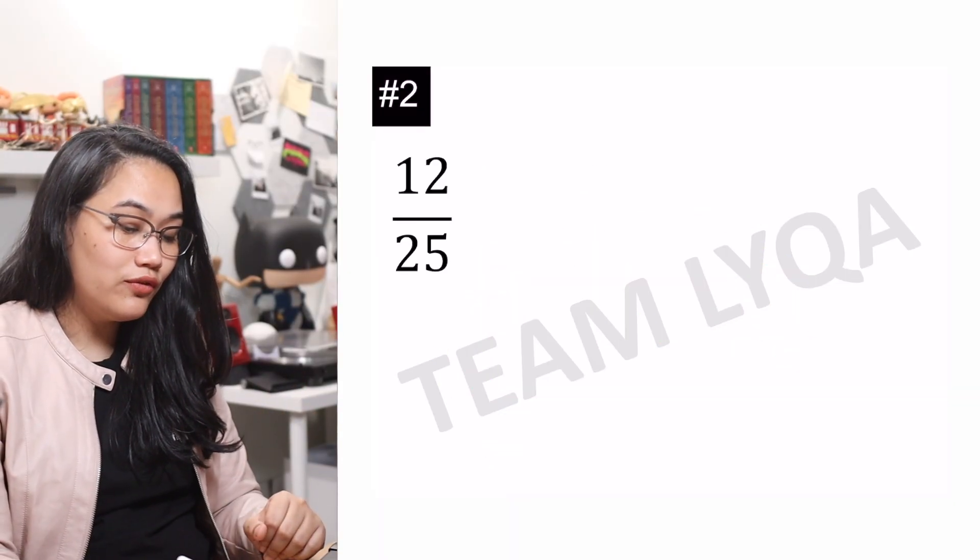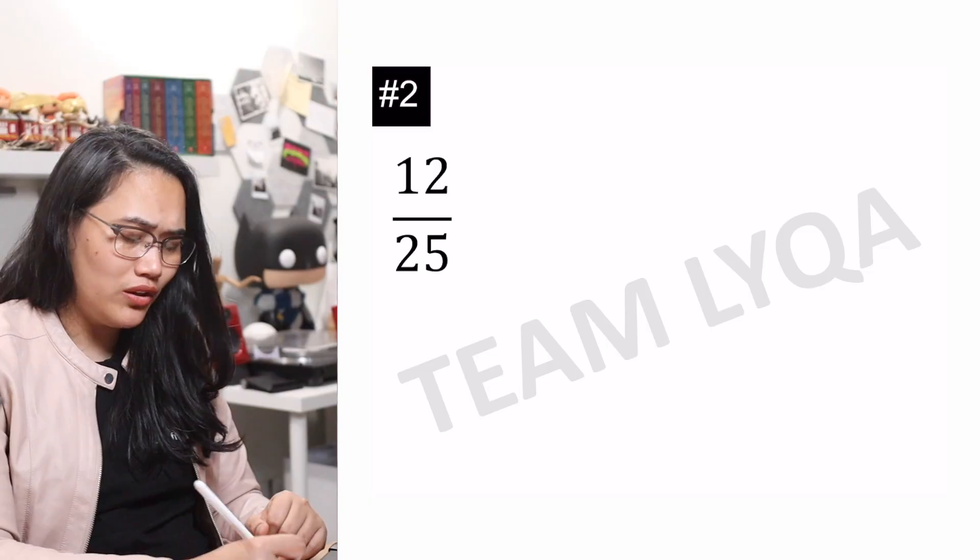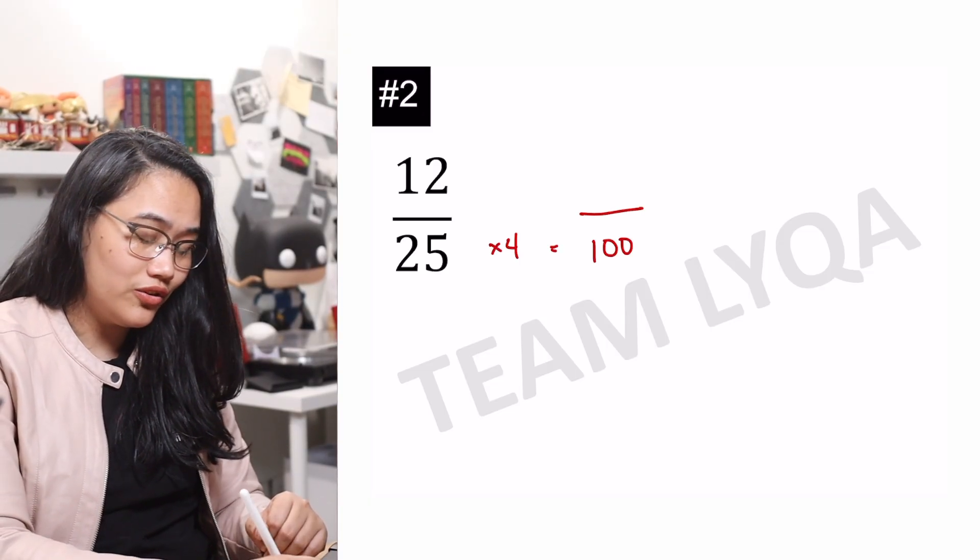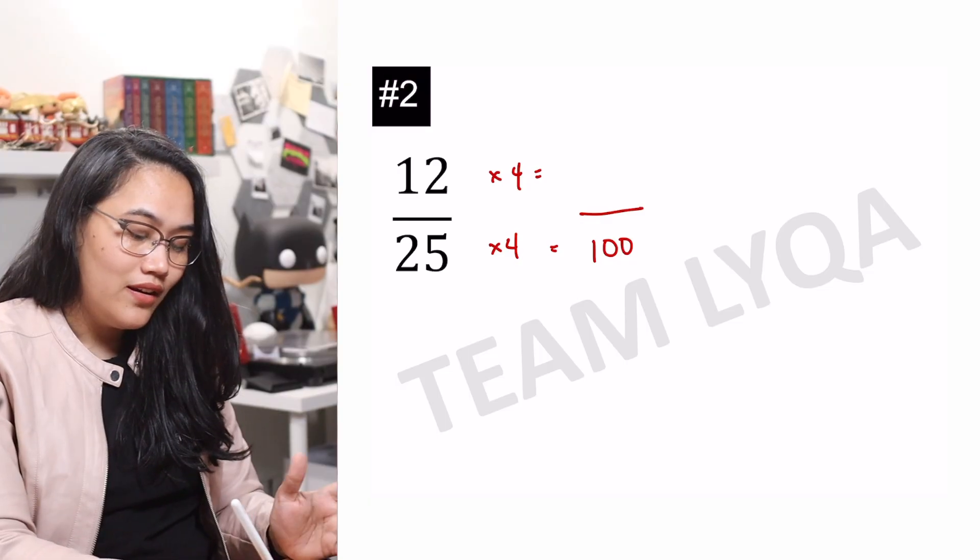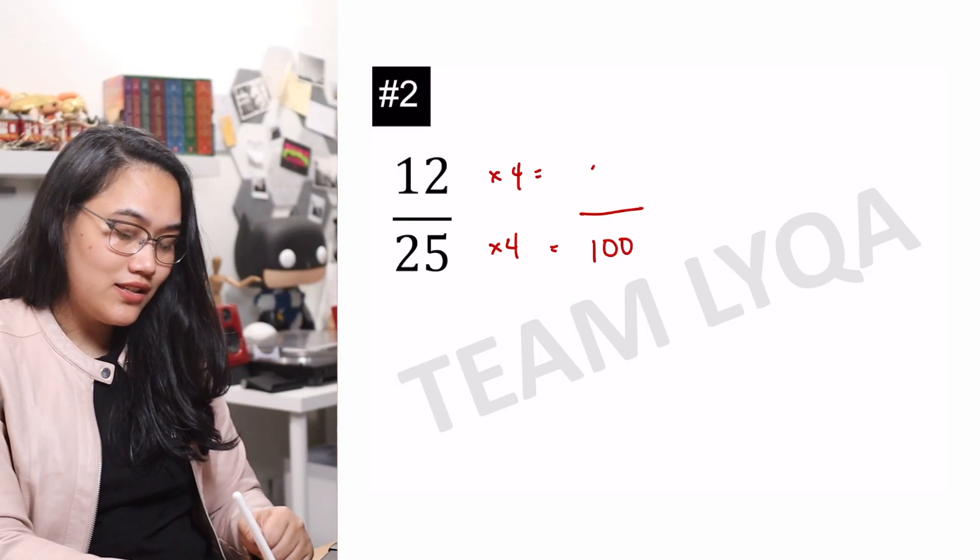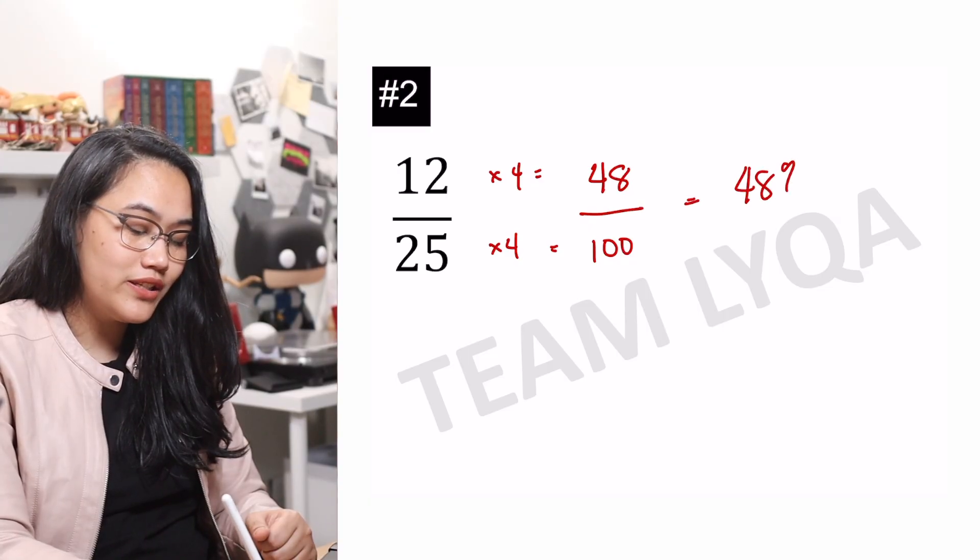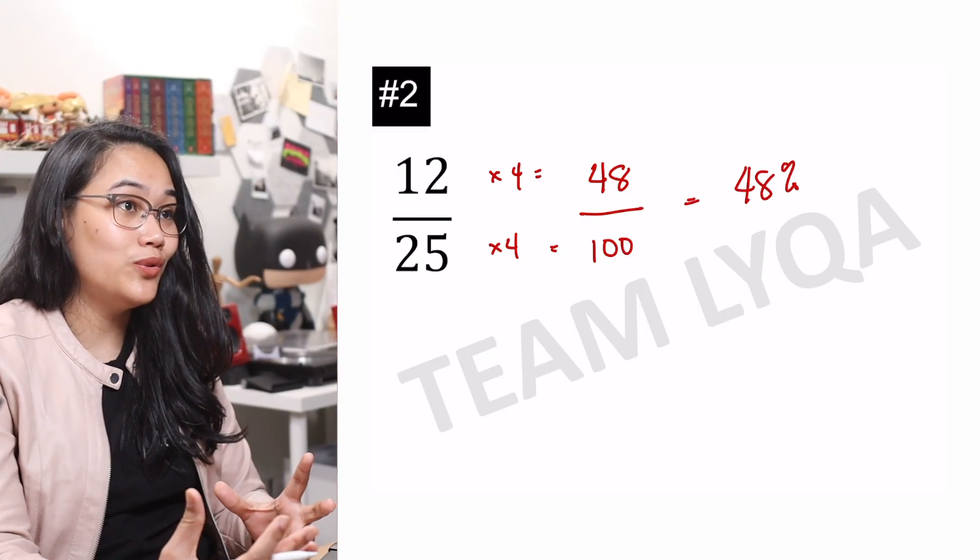Question number 2. 12 over 25. So, again, 25 times 4 lang naman. Magiging 100 na siya. So, yun yung gagawin ko. Times 4 times 4. Ginawa ko sa baba. Gagawin ko rin sa taas. This is going to give me 48. So, 48 over 100 or 48%. So, it's really fast if you know what to do, right?